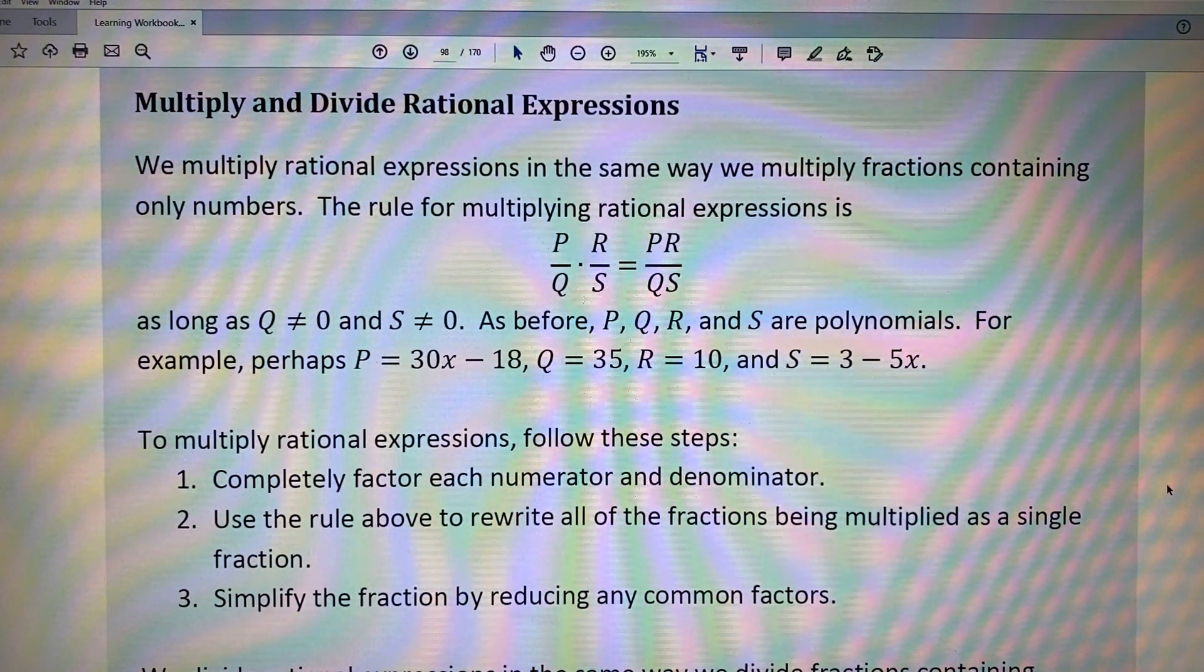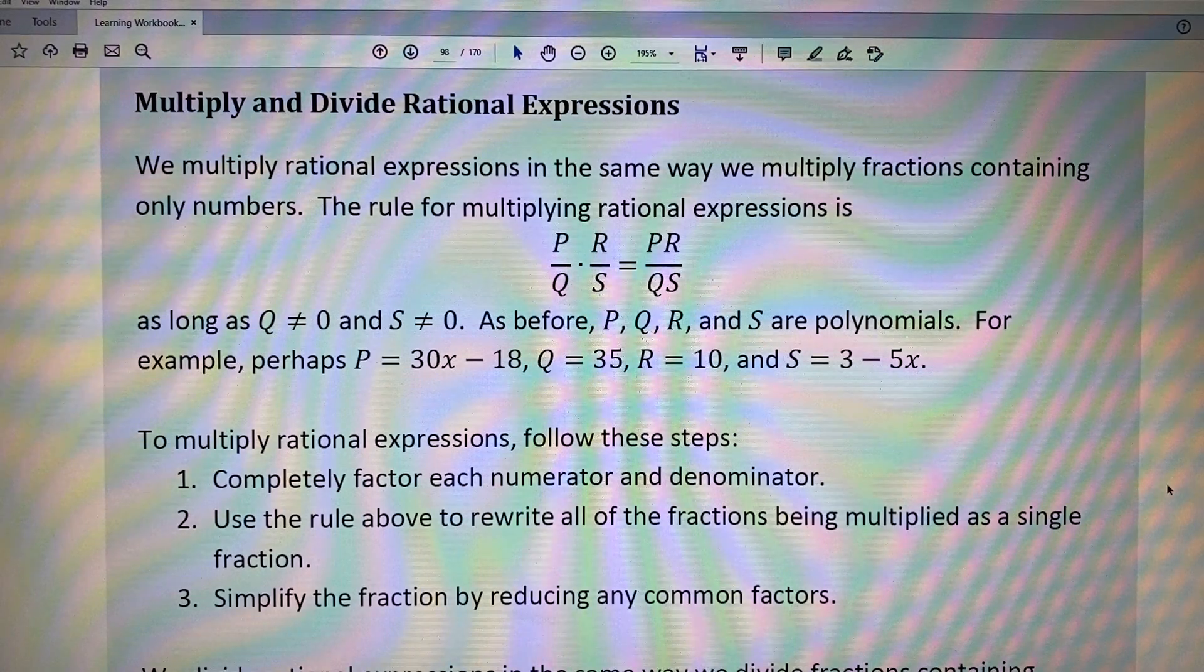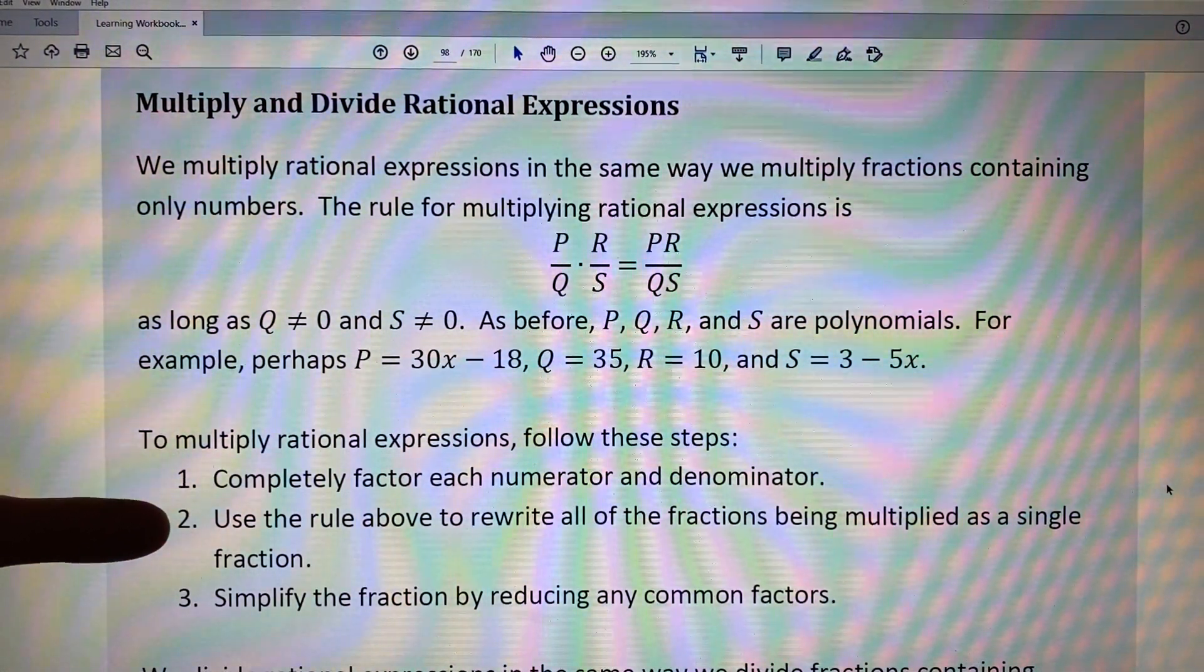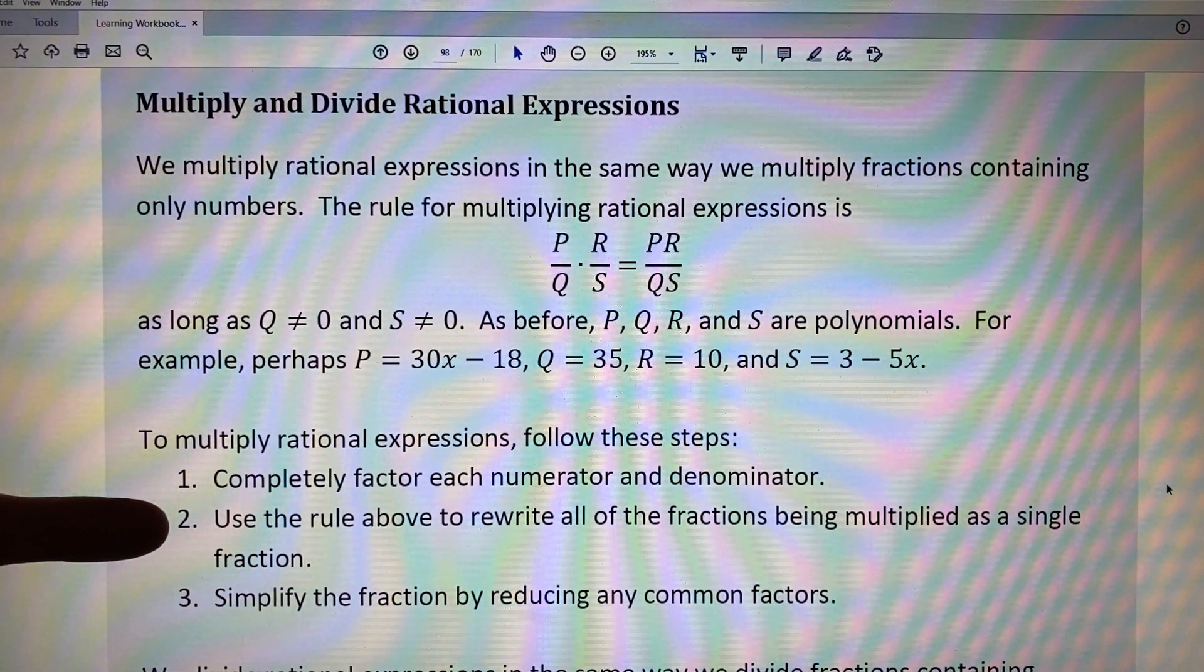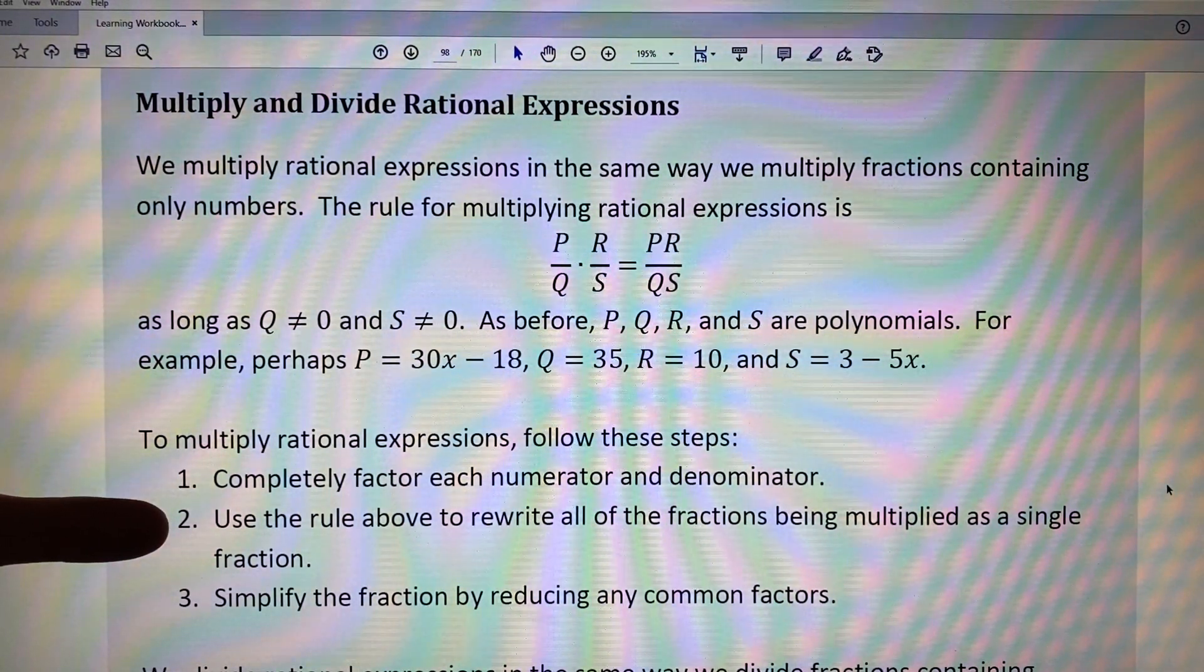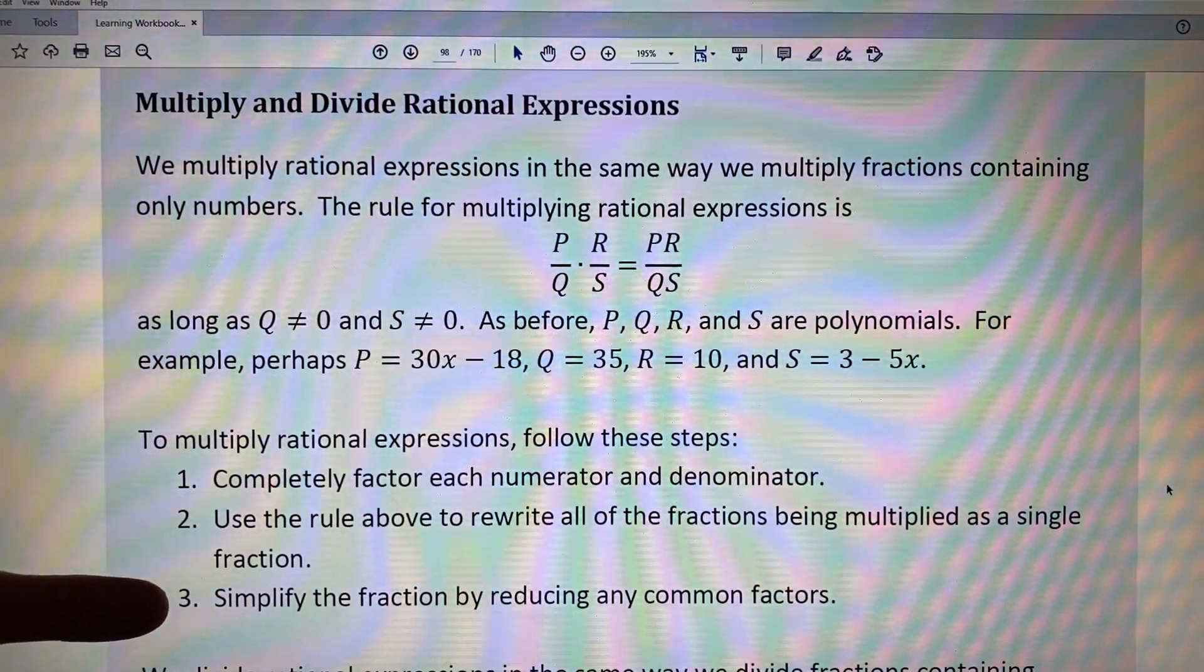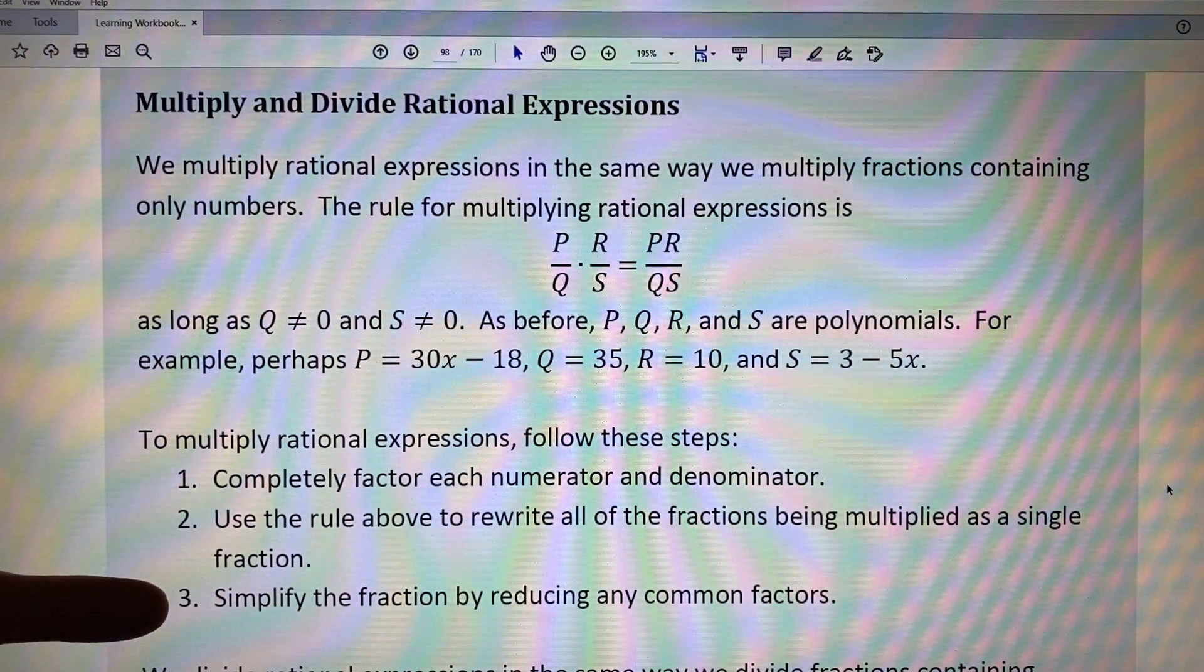To multiply rational expressions, follow these steps: Step 1, completely factor each numerator and denominator. Step 2, use the rule above to rewrite all of the fractions being multiplied as a single fraction. Step 3, simplify the fraction by reducing any common factors.